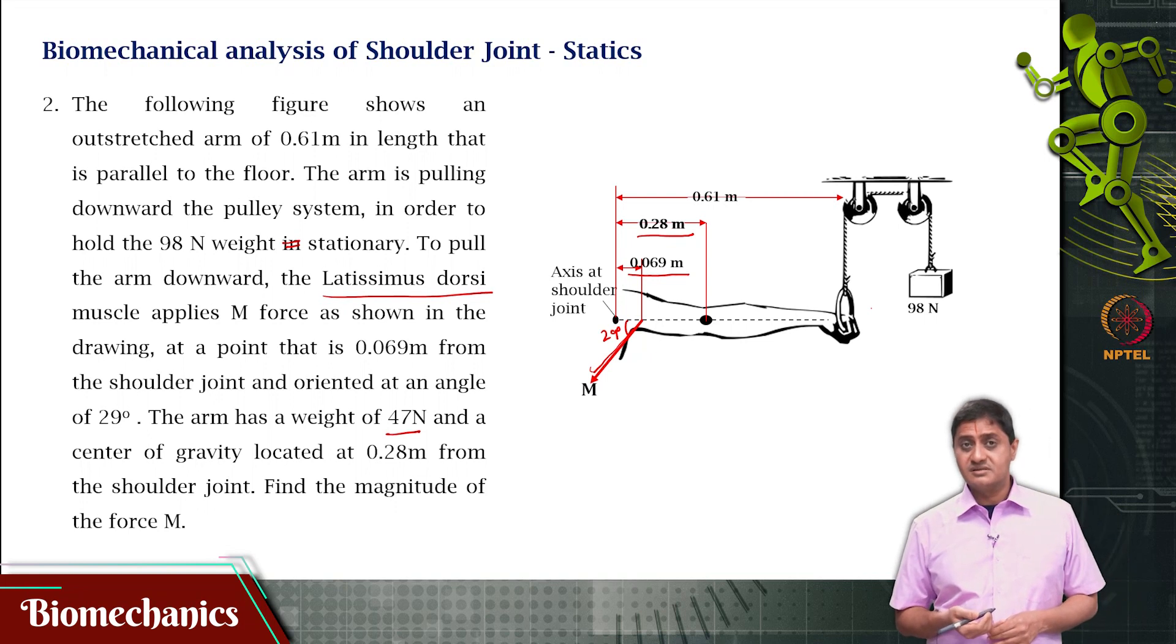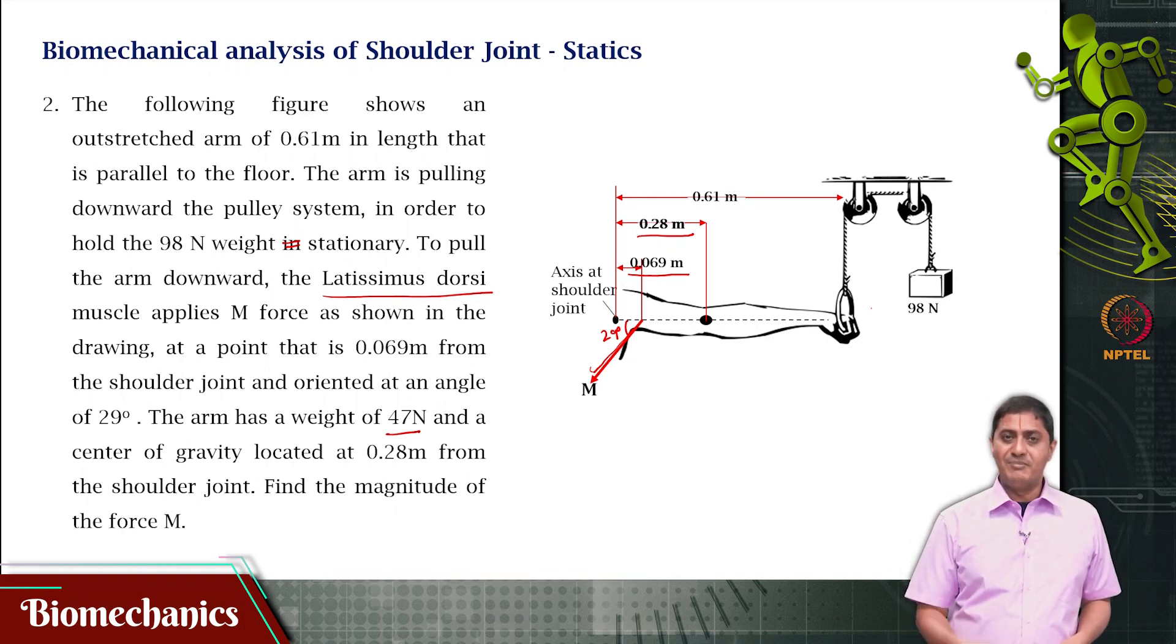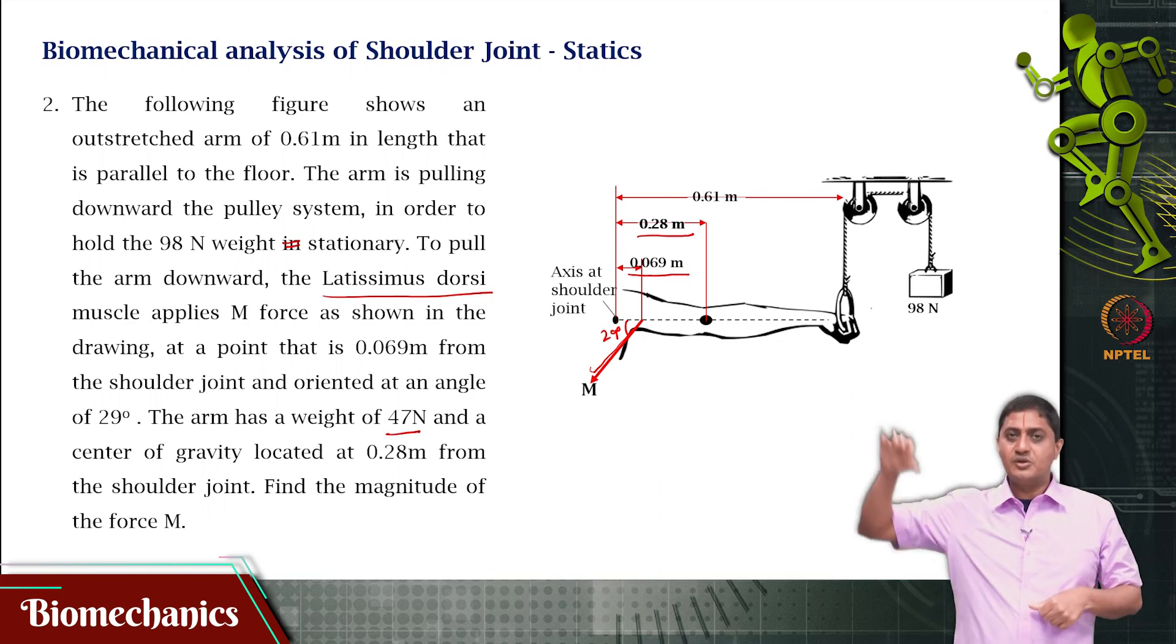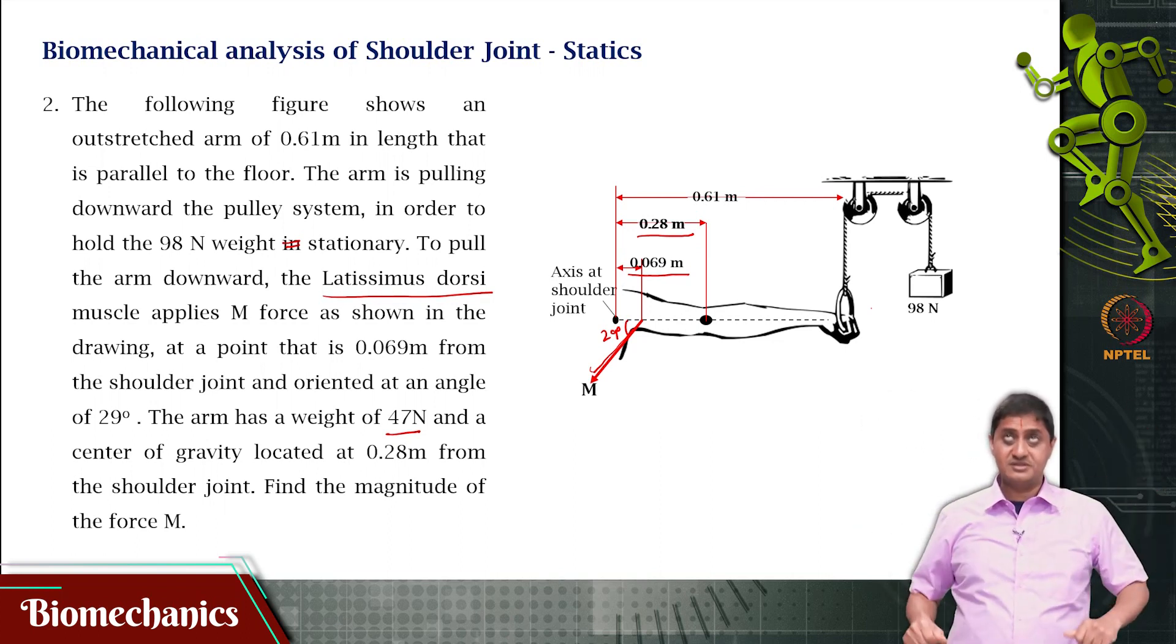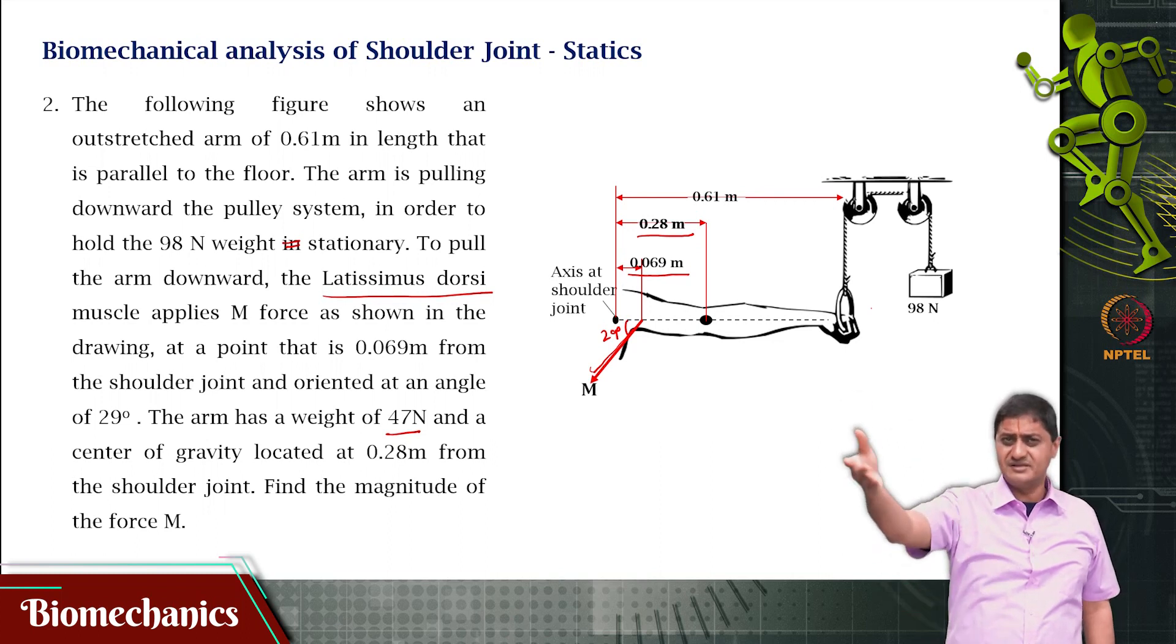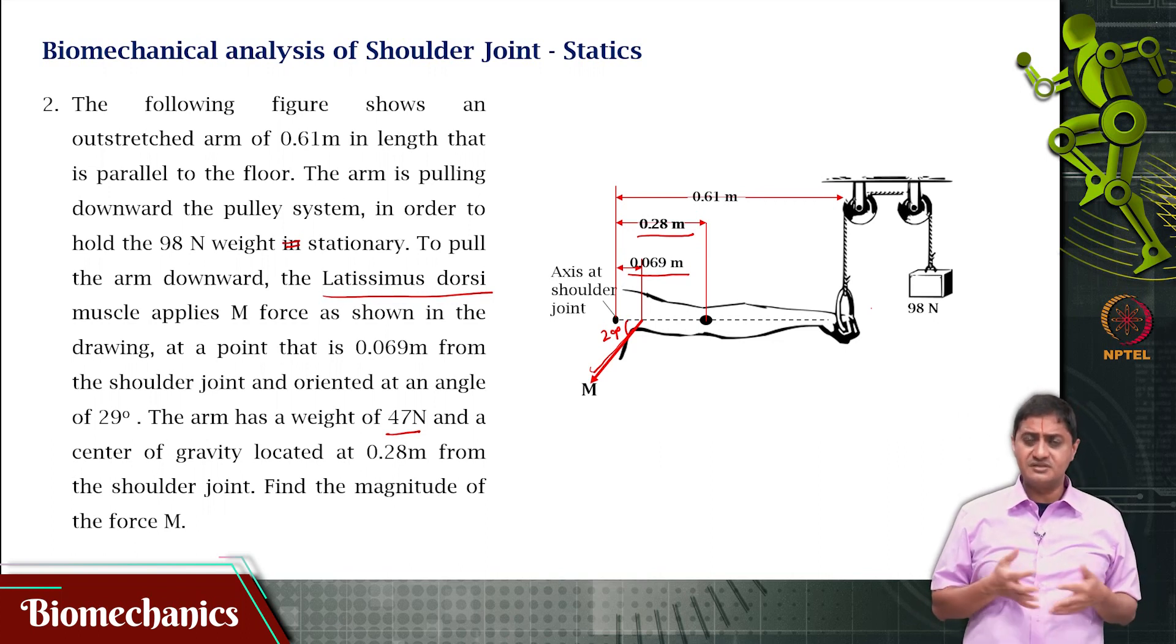Question is what is the force produced by the Latissimus Dorsi muscle. So, this Latissimus Dorsi is this muscle that is on the back. When people do pull ups, when you do pull up you are essentially engaging the Latissimus Dorsi or when you are pulling something. There is also this exercise machine called lat pull downs. So, there will be a bar which you pull down and that is actually overcoming some weight that is on the other side of the machine.